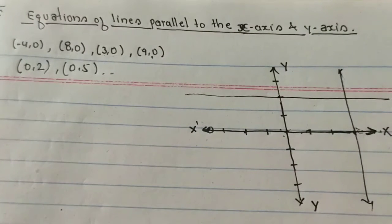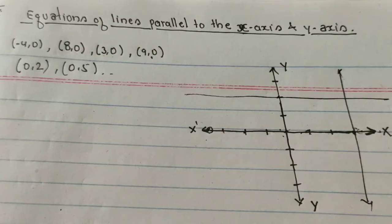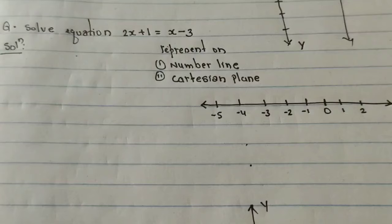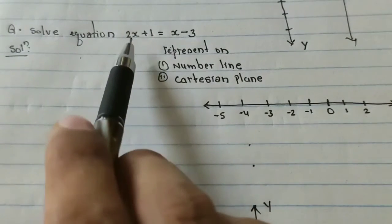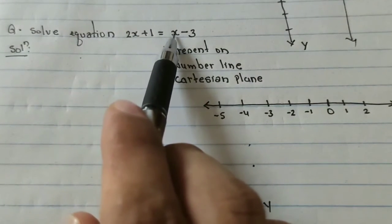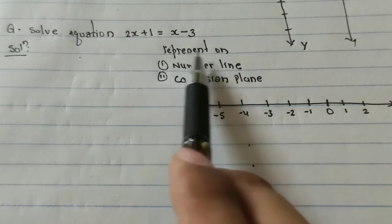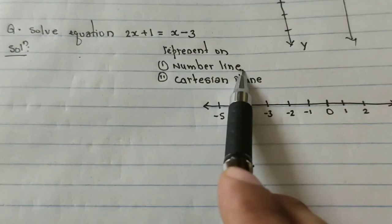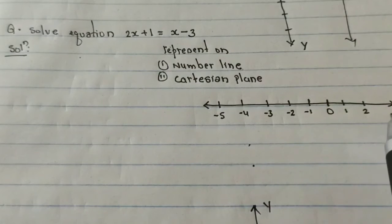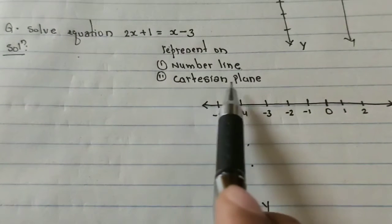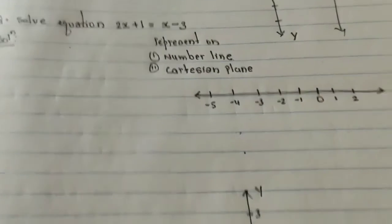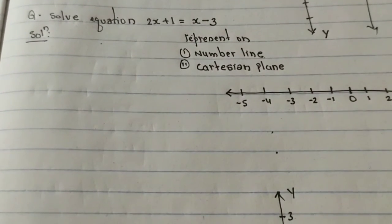Now we will see how to plot an equation on a number line and a Cartesian plane. Now suppose this is the question: solve equation 2x + 1 = x - 3 and represent the equation on number line and on Cartesian plane.